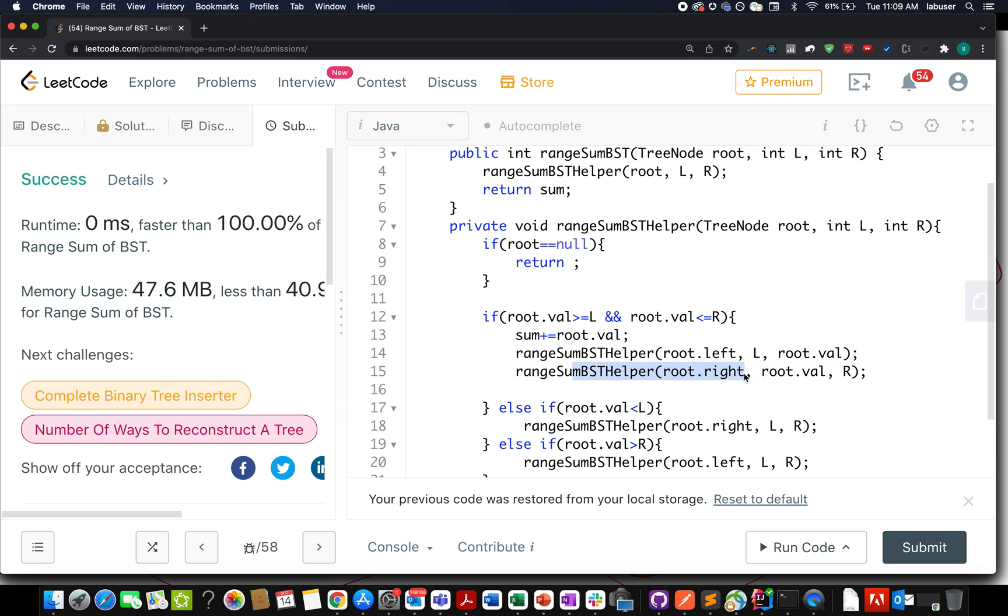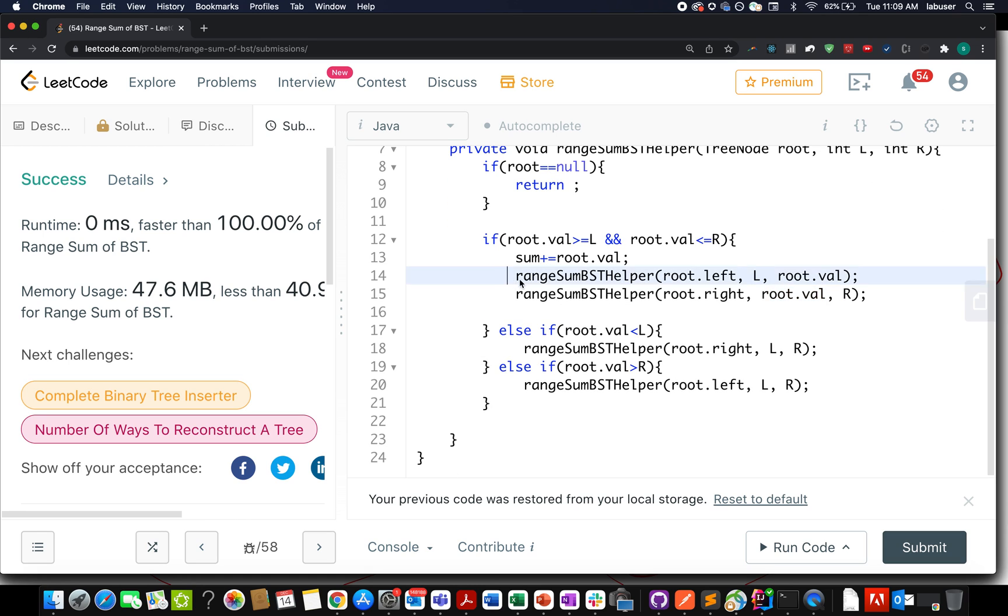Also, while iterating through its left subtree and right subtree, I update the range, because root.val becomes the limiting factor here. So the range gets updated to left comma root.val, and while moving across its right child, the range gets updated to root.val comma right. I hope you understood this concept. However, range reduction is not necessary.